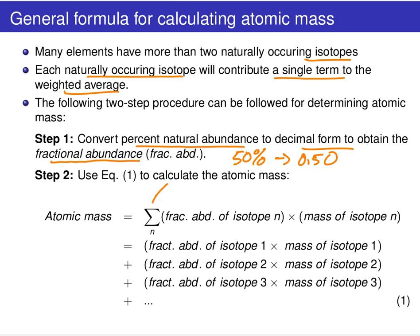Using our summation symbol, we're going to sum over all naturally occurring isotopes — n runs over all n isotopes. For each term in the sum, we multiply the fractional abundance by the mass of that specific isotope. It doesn't matter if you have two or ten isotopes; you just add up a single term for each one.